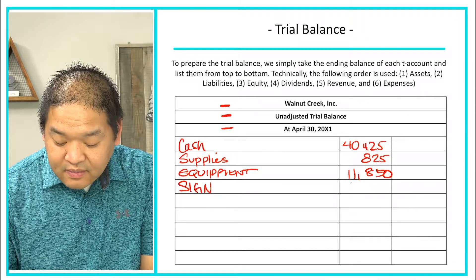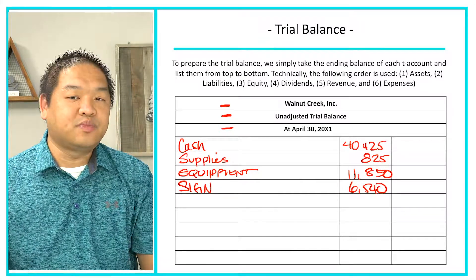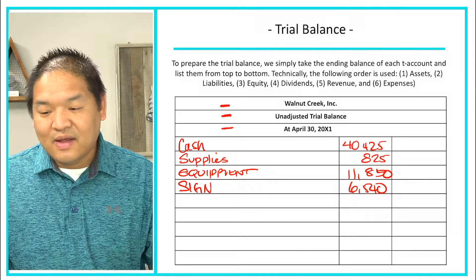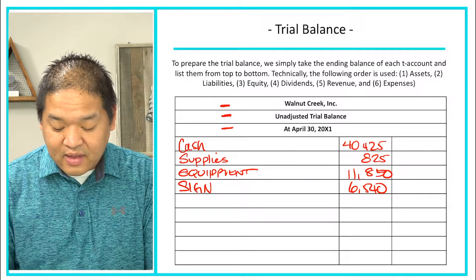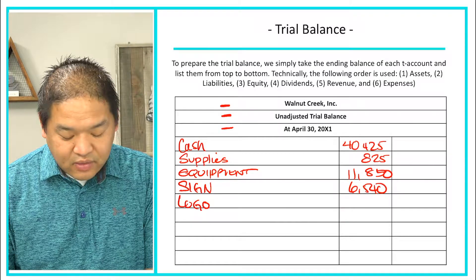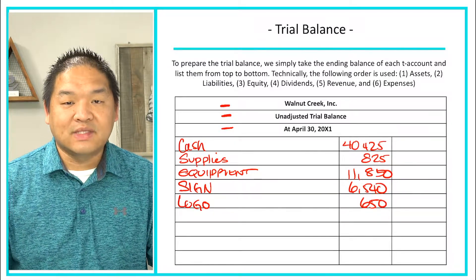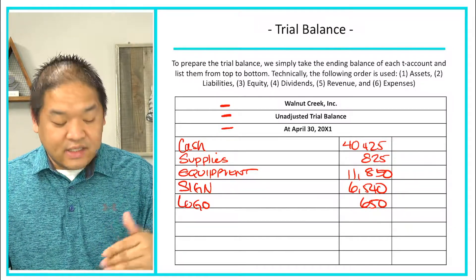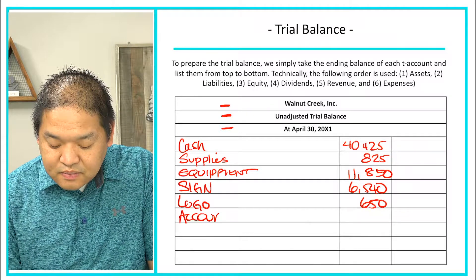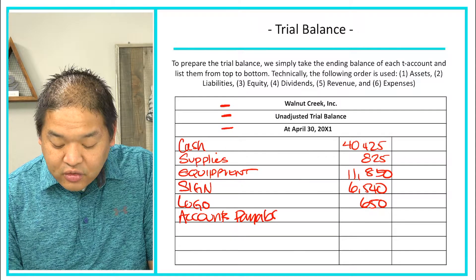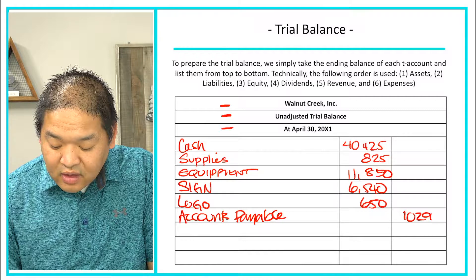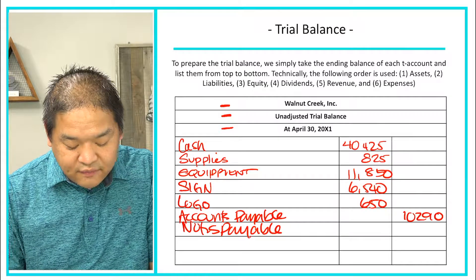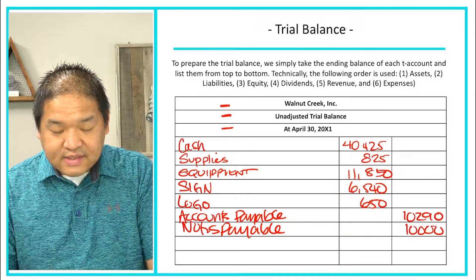The sign is less liquid because it's specific to the business and harder to sell, so it goes lower on the list. The logo is the least liquid asset since it's particular to this business. Moving to liabilities: accounts payable is a credit, so it goes in the credit column, and notes payable is $10,000.